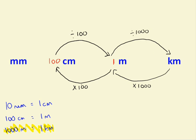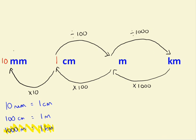Next, we'll consider converting centimetres to millimetres. In 1 centimetre there are 10 millimetres. So to convert from centimetres to millimetres, we times by 10. So 7 centimetres: 7 times 10 is the same as 70 millimetres. And to get from millimetres to centimetres, we divide by 10. So 90 millimetres divided by 10 is the same as 9 centimetres.